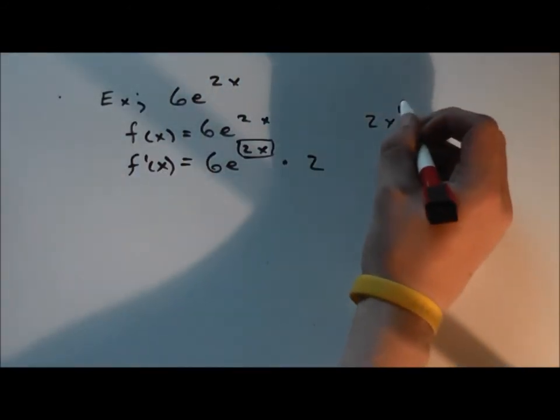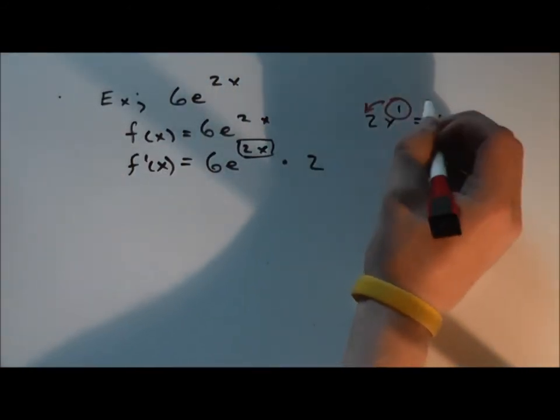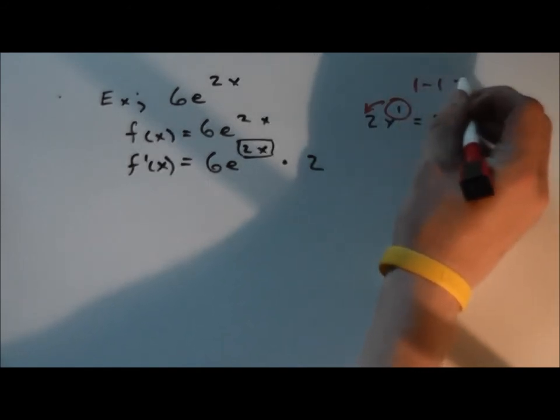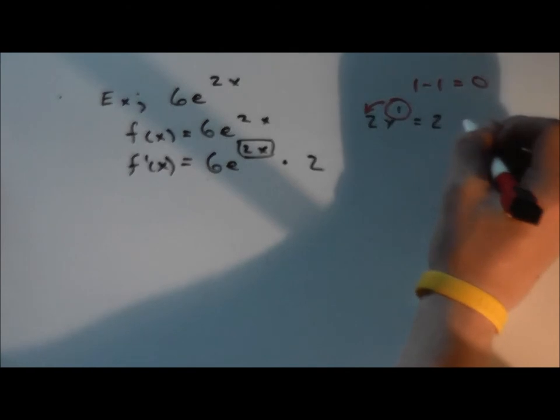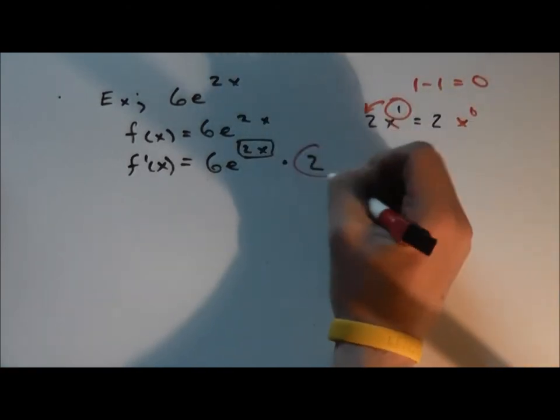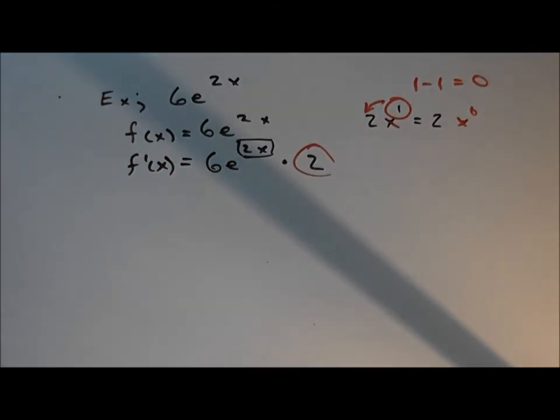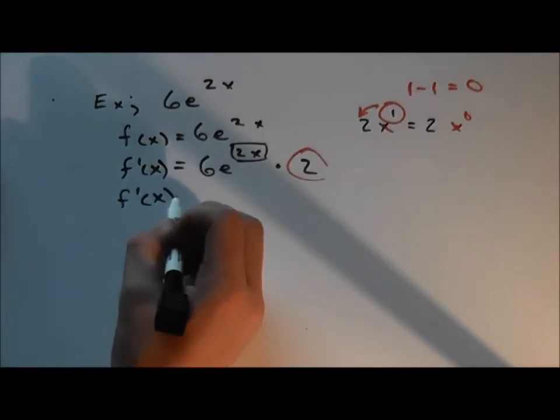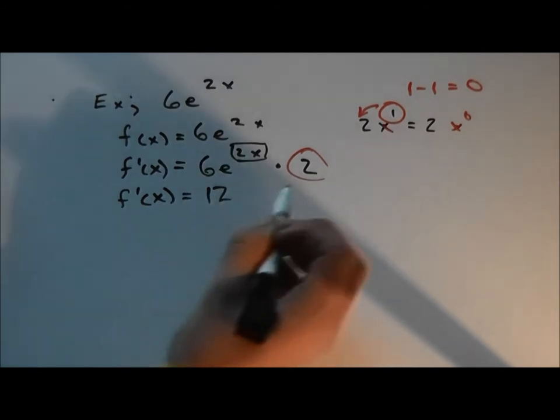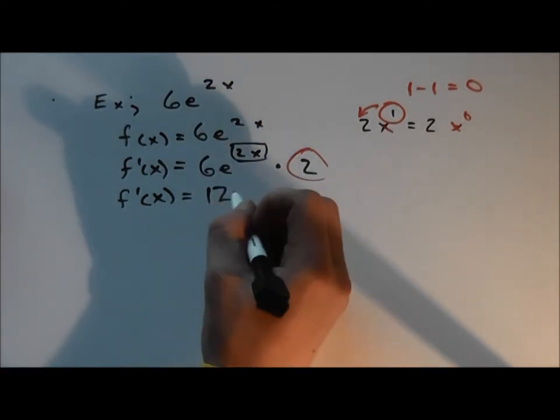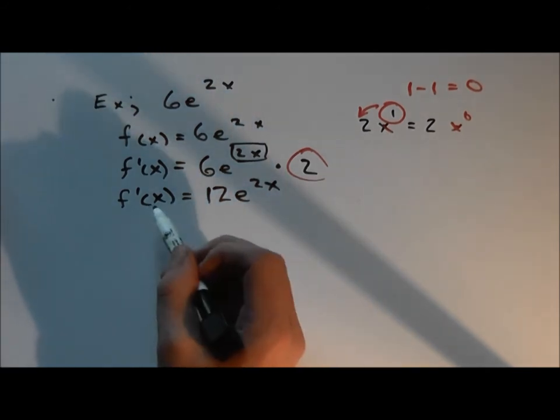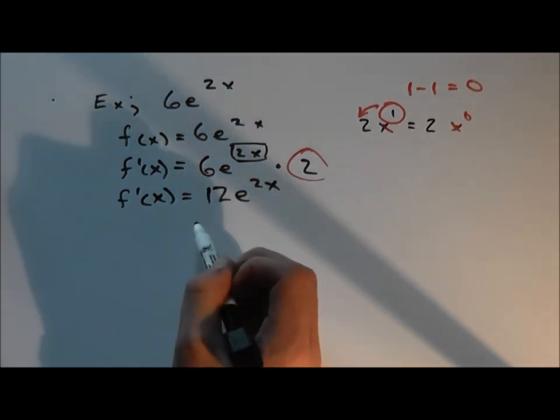And this is because we multiplied 1 by 2, and then we subtract 1 minus 1 of the power. That equals 0, therefore x does not exist. It's 0. And that's how we got 2. And then proper form, we multiply this 2 by 6. And that is how you take the derivative of an exponential function.